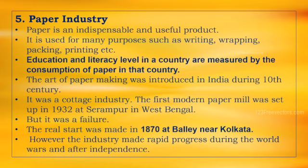The first modern paper mill was set up in 1832 at Serampore in West Bengal, but it was a failure. The real start of modern paper was made in a mill in 1870 at a place called Bally near Calcutta. However, the industry made rapid progress during the world wars and after independence.